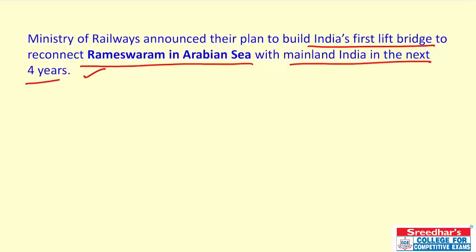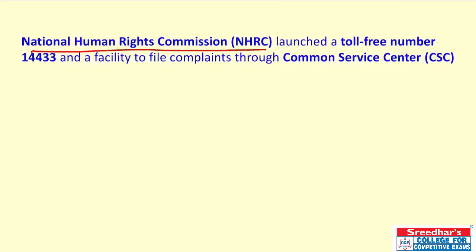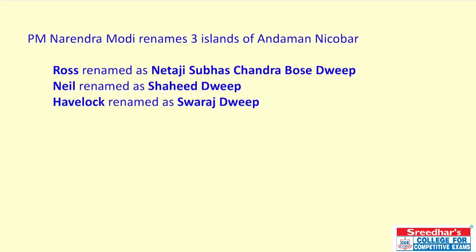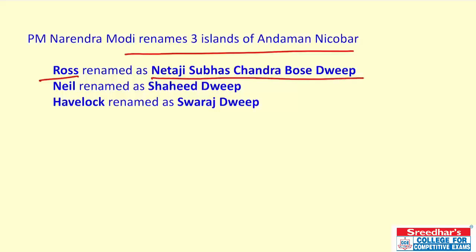The National Human Rights Commission has launched a toll-free number — 14433 — to file complaints through Common Service Centers. Prime Minister Narendra Modi has renamed three islands of Andaman and Nicobar: Ross Island is renamed Netaji Subhash Chandra Bose Dweep, Neil Island is renamed Shaheed Dweep, and Havelock Island is renamed Swaraj Dweep.